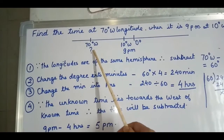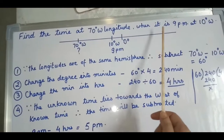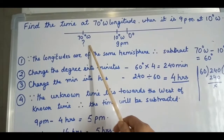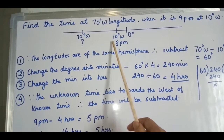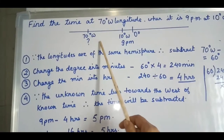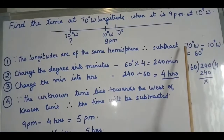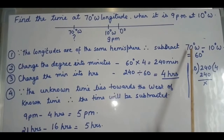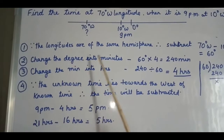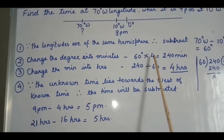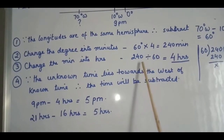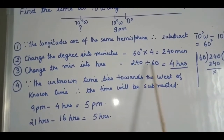We have to find the time at 70 degrees west, and the known time at 10 degrees west is 9 PM. First step: since both longitudes are in the same hemisphere, we subtract. 70 degrees west minus 10 degrees west equals 60 degrees. Second step: multiply by 4 to convert to minutes, giving 240 minutes.